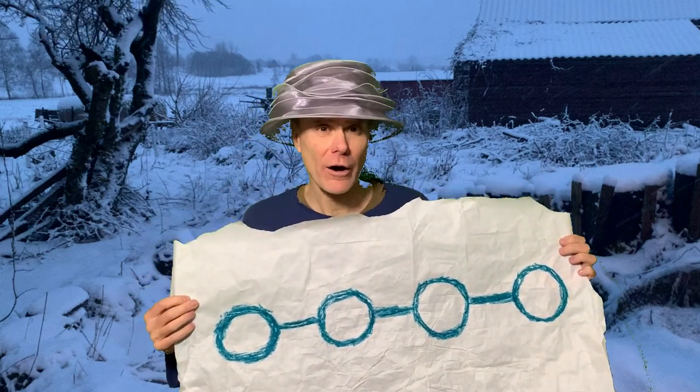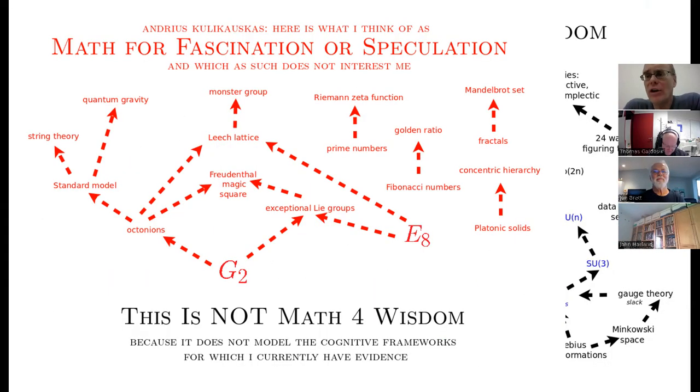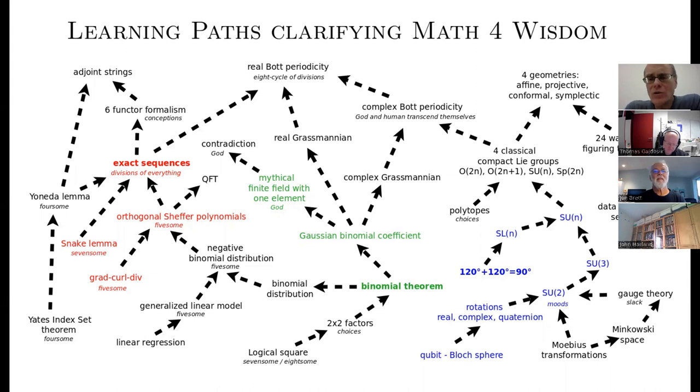Something that came up today talking with Thomas is the difference between math for wisdom and math for fascination or math for inspiration, or math for curiosity. Many people are attracted to beautiful things in math, like the exceptional groups E6, E7, E8, or the Leach lattice. I'm trying to focus specifically on that mathematics which matches cognitive frameworks. And so these cognitive frameworks that are fitting into a language.